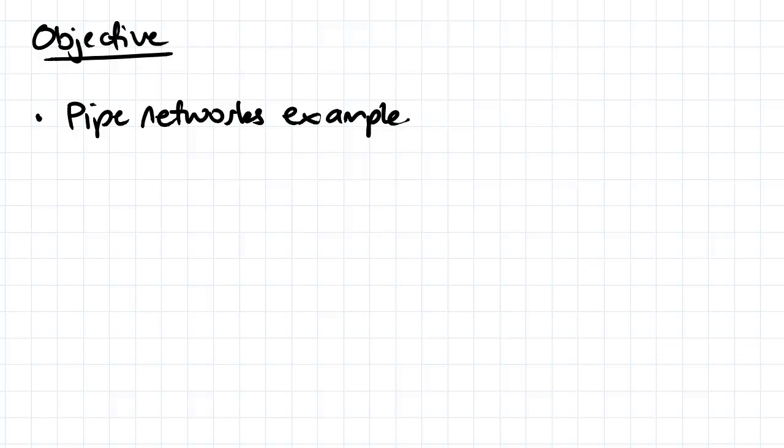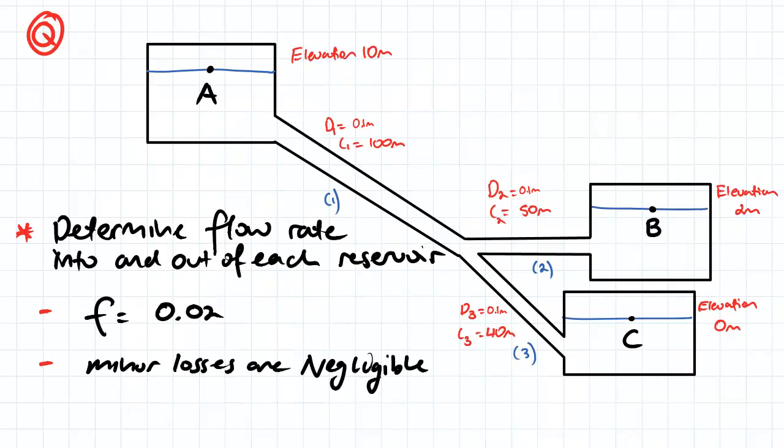Hey guys, the objective for this video is to perform an example using pipe networks. We've got a question here: determine the flow rate into and out of each reservoir.